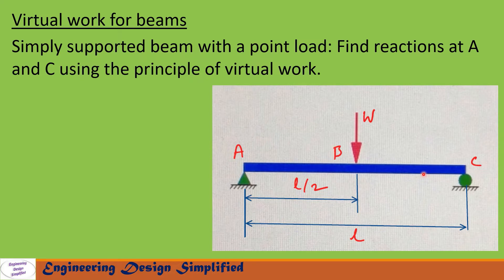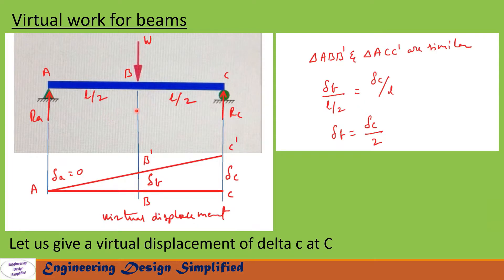The beam is redrawn here. Distance from A to B is L/2 and B to C is L/2. At end A there is a reaction RA acting vertically upwards, at end C there is a reaction RC acting vertically upwards, and the applied load W is acting vertically downwards at point B.